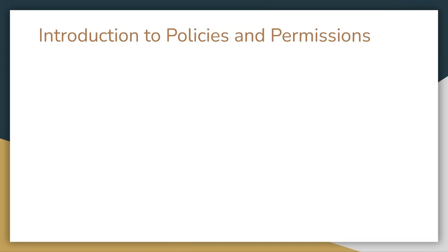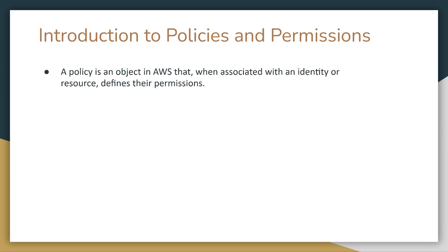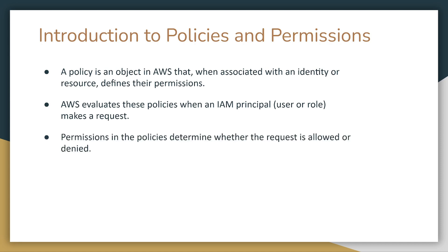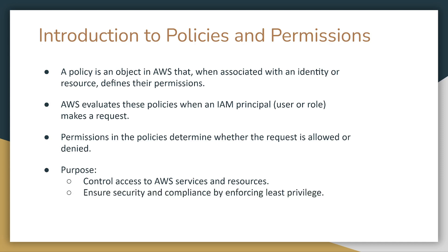A policy is an object in AWS that, when associated with an identity or resource, defines their permissions. AWS evaluates these policies when an IAM principal, user, or role makes a request. Permissions in the policies determine whether the request is allowed or denied. The purpose of policies is to control access to AWS services and resources, and to ensure security and compliance by enforcing the least privilege rule.